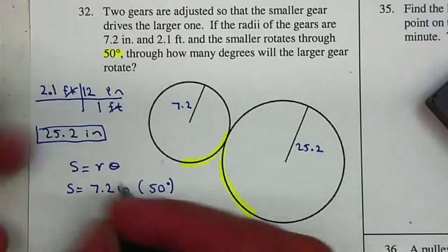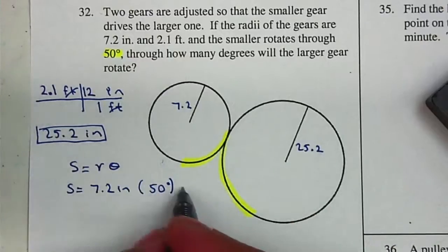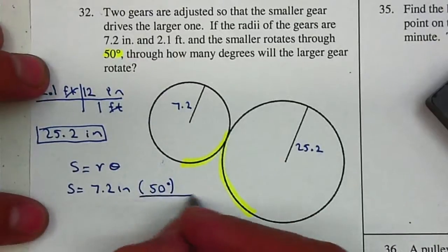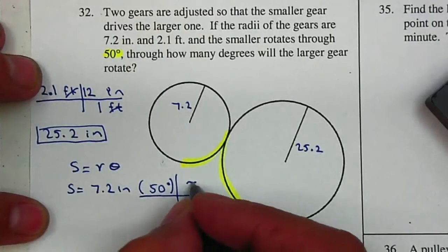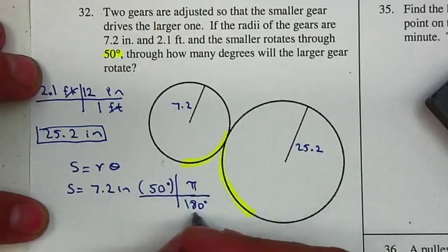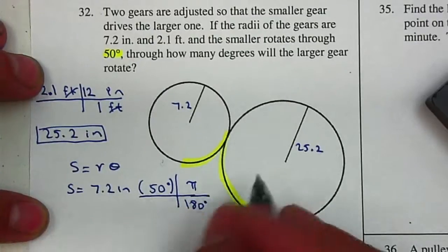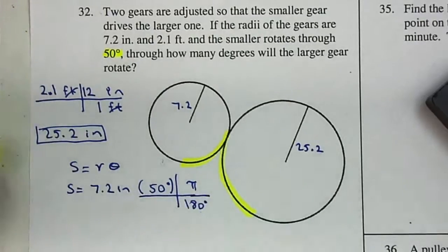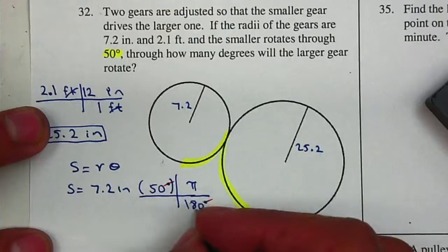But remember that your angle has to be in radians, so I'm going to make my conversion here. 180 degrees equals pi. From here I can type it in and the calculator, my degrees will cancel, I can cancel a zero.